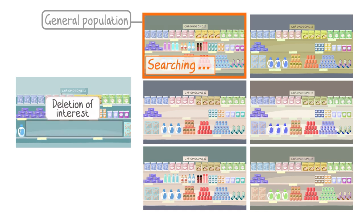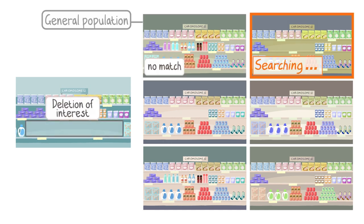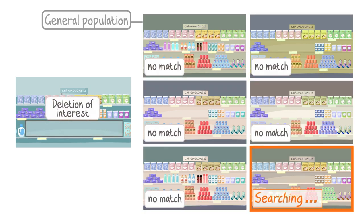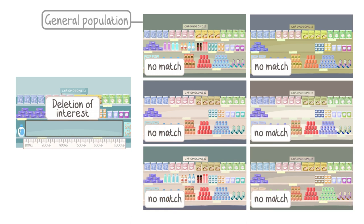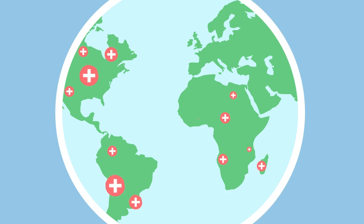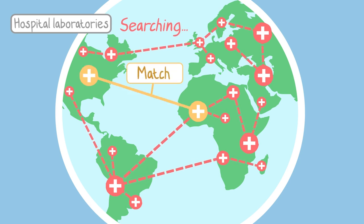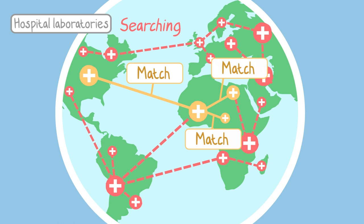When a scientist finds a deletion or duplication that is not seen in anybody in the general population, they measure its size and look at what products we would expect that shelf to contain. They also look at information from hospital laboratories around the world to see if anyone with a similar deletion or duplication has been described before and whether they had any health problems.